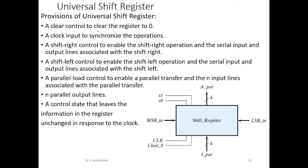In this video clip, let's discuss the universal shift register. A universal shift register will have the following functions. There is a clear control to clear the content of the register to 0 — that is, all the flip-flops will be forced to store 0 upon activating the clear signal. Then we have a clock input to synchronize the operation of all the flip-flops in the register.